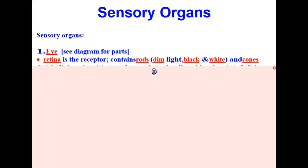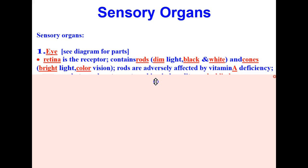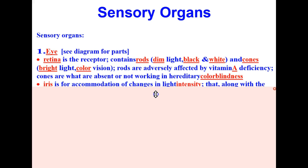Now let's talk about some of those structures and their functions. The retina is the receptor in your eye. It contains rods which operate best under dim light, and the rods are responsible for seeing black and white. And your cones, which operate during bright light, and this is what gives you color vision. Rods are affected by vitamin A deficiency, and cones are what are absent or not working in hereditary color blindness that we talked about in genetics earlier this year.